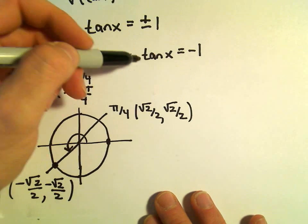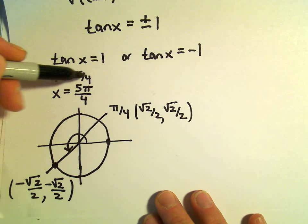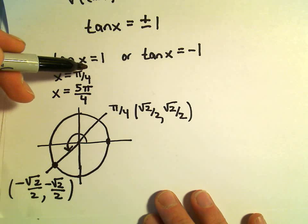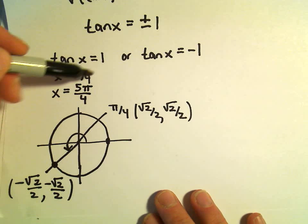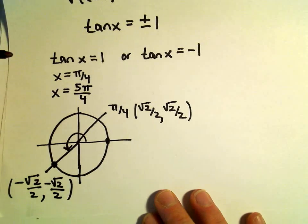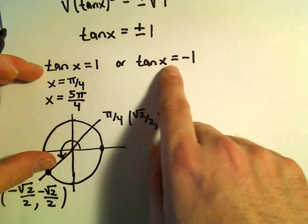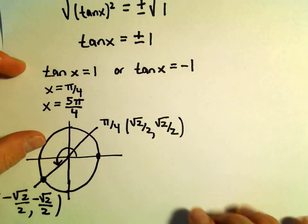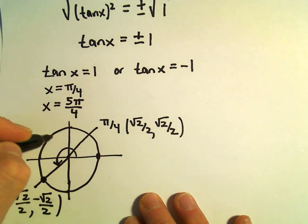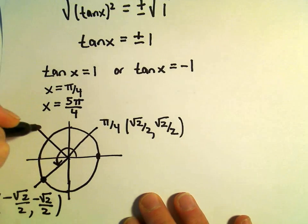At some point, too, I'm going to have to start thinking about, do I need to add or subtract either 2 pi or maybe pi. What exactly do I need to do to get all solutions? But first, I'm going to solve this other part. So tangent of x equals negative 1, I think that's going to happen at the other angles.